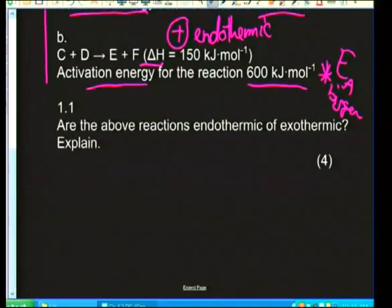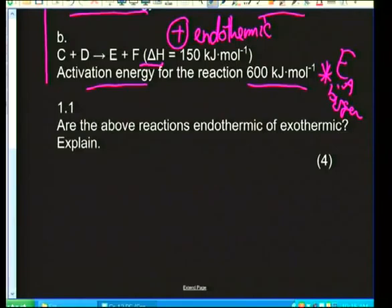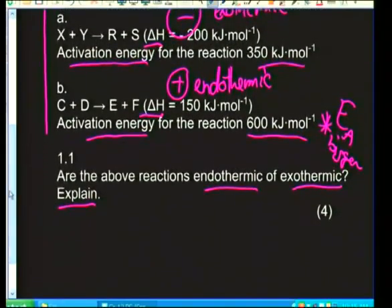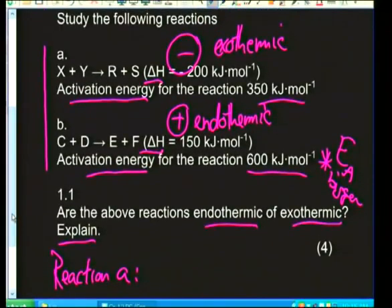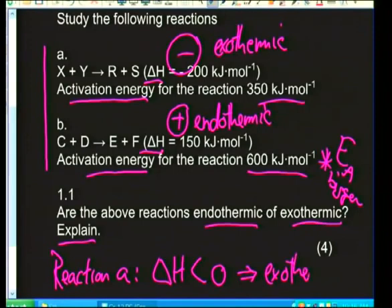The first question asks: are the above reactions endothermic or exothermic? For reaction A, ΔH is less than zero, so it must be exothermic. To check our understanding, let's sketch an energy profile. We draw axes — energy on the vertical, reaction coordinate on the horizontal — with the reactants at a higher energy level and the products lower.